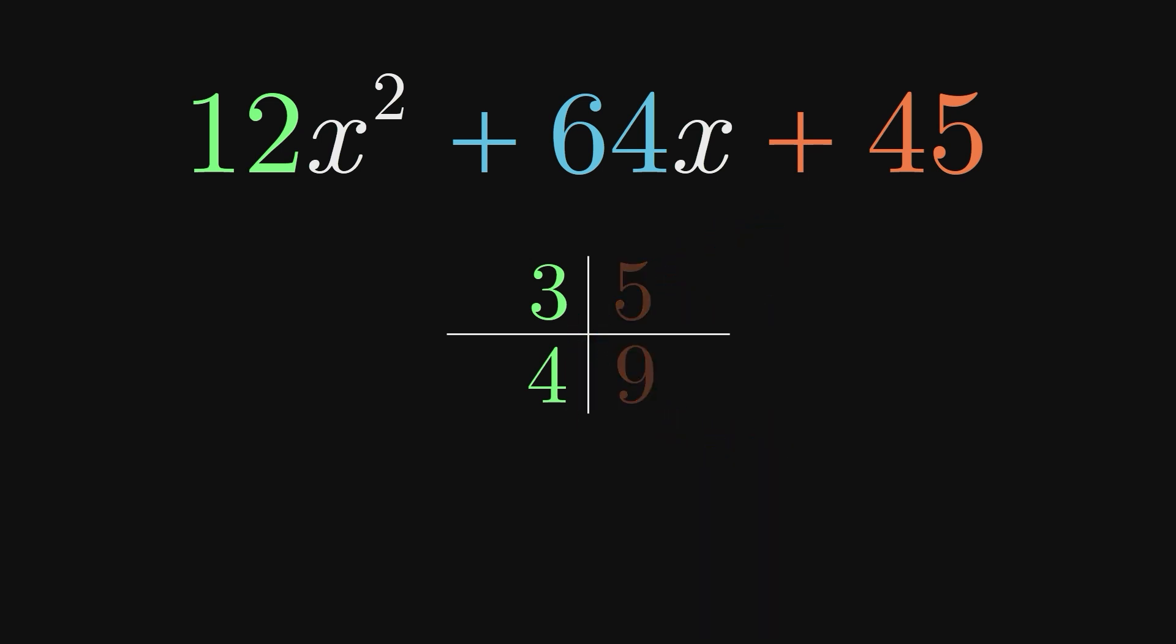Perhaps switching the positions of our 5 and 9 will work. Again, the cross multiplications do not give a sum of 64. We could try several other pairs of numbers that multiply to 45, but we quickly see that none of them give us the 64 we want.